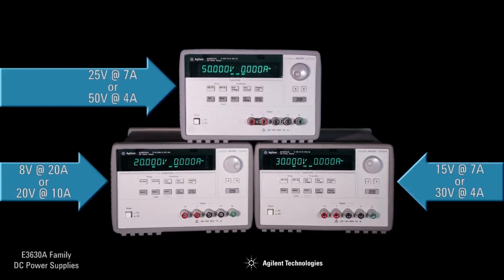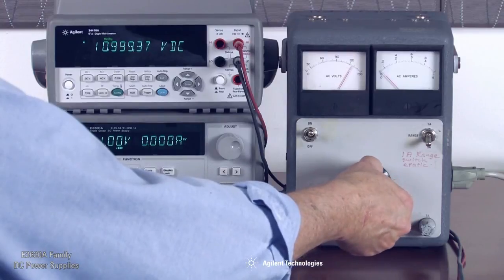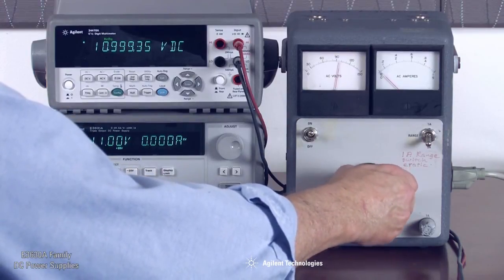Just select the supply with the voltage, current, and power ratings you need. With 0.01% load and line regulation, these power supplies can maintain a steady output when power line or load changes occur.